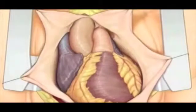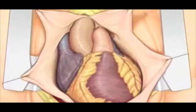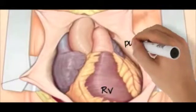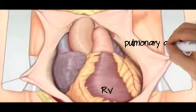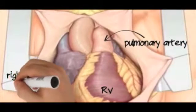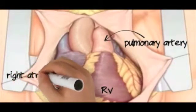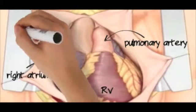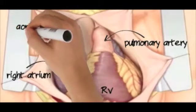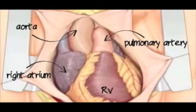Calcification may cause stroke or distal ischemia. Looking at the surgical field, you should be able to identify the following structures: the right ventricle, the pulmonary artery, the right atrium or right atrial appendage, and the aorta.